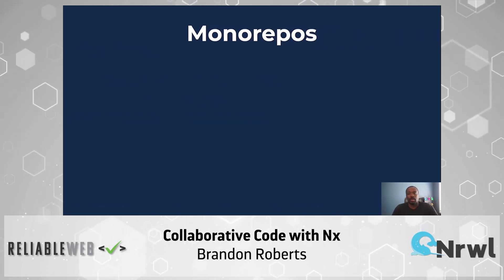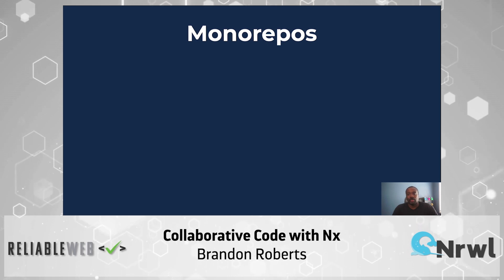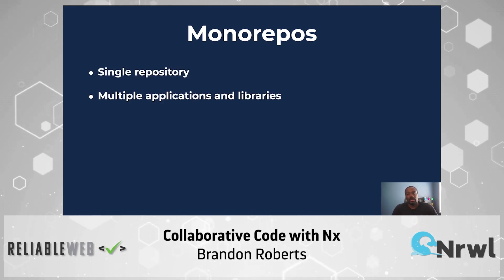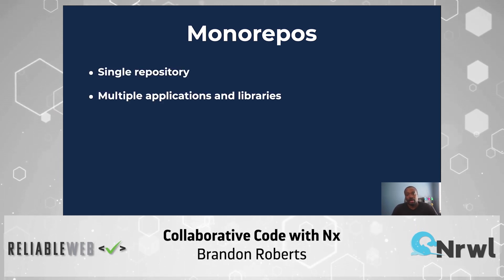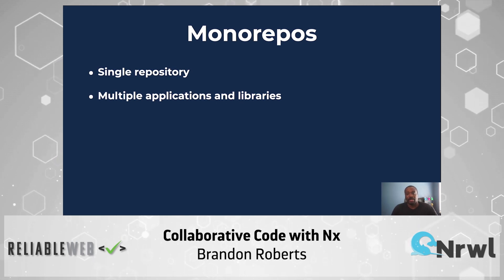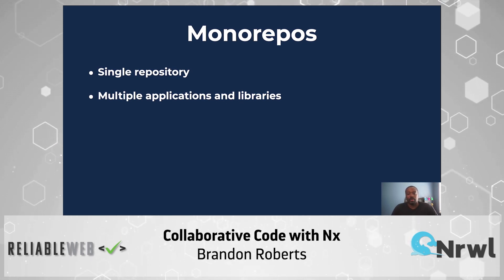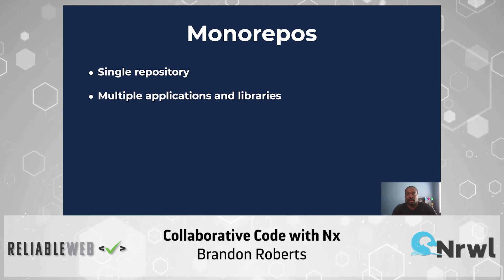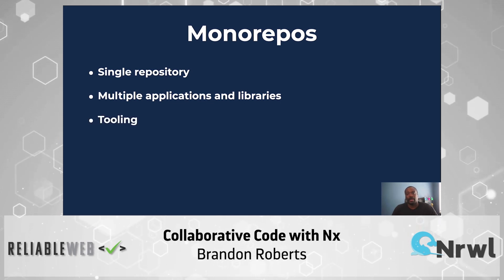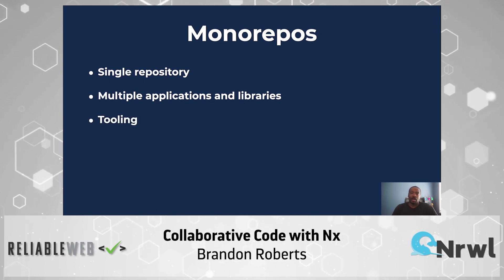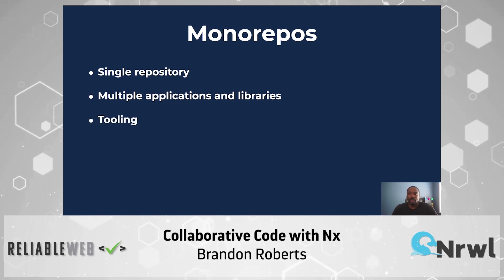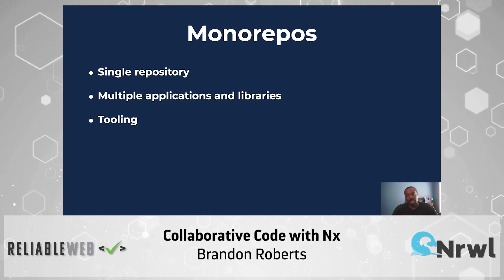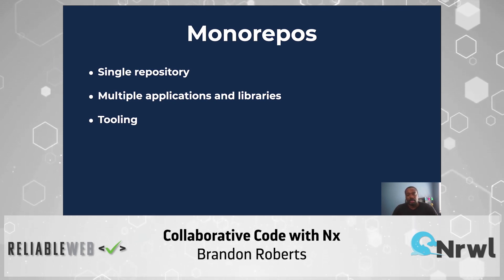A monorepo is a single git repository that holds the source code for multiple applications and libraries. This could include all of your applications and libraries scaled up across your entire organization, along with any tooling that goes along with them such as miscellaneous scripts, documentation, and more.